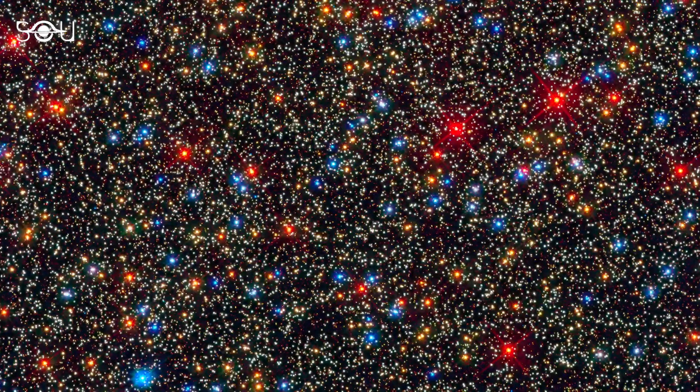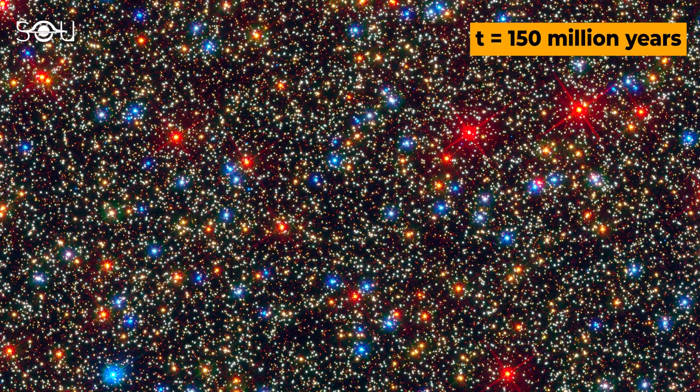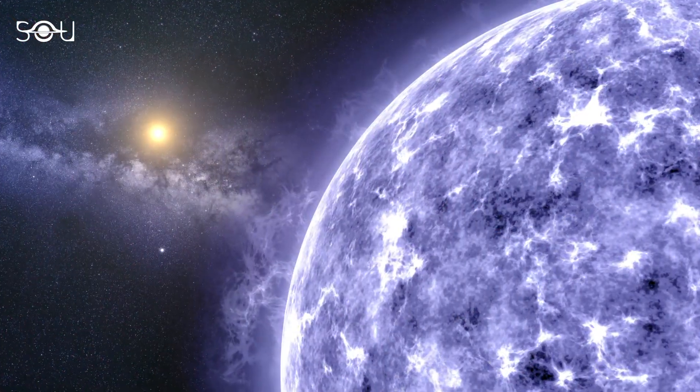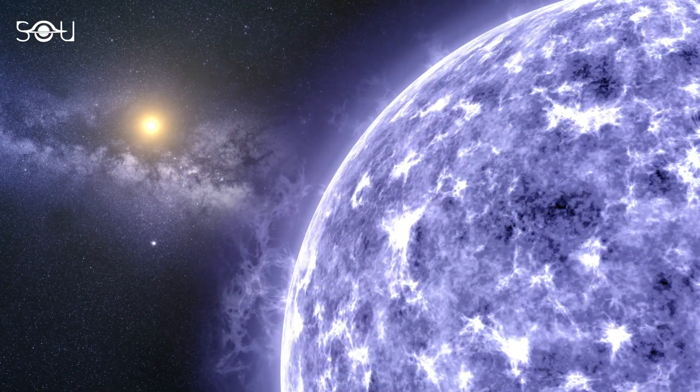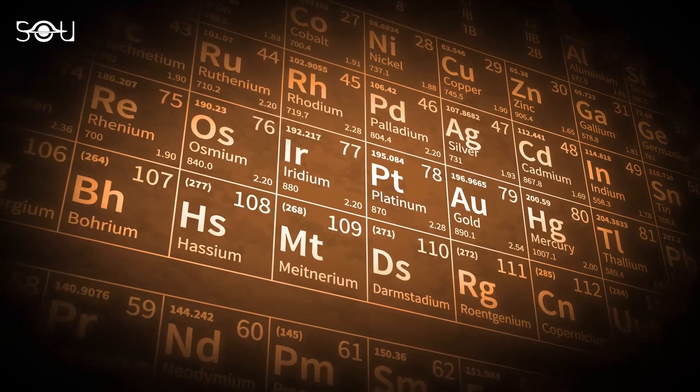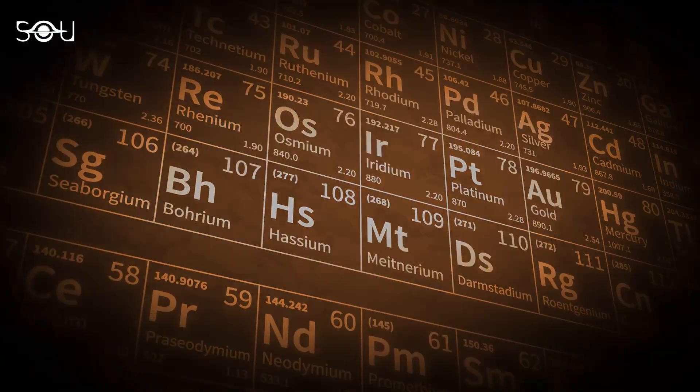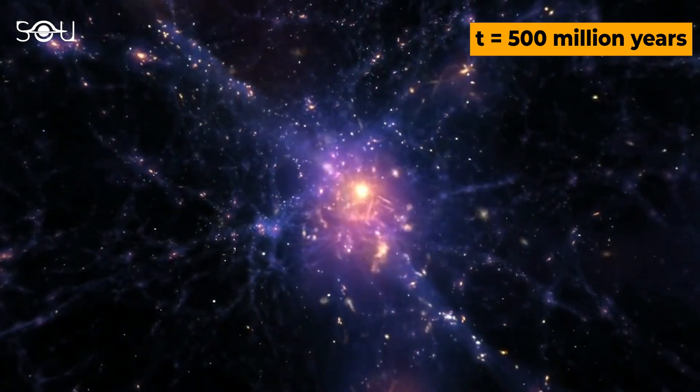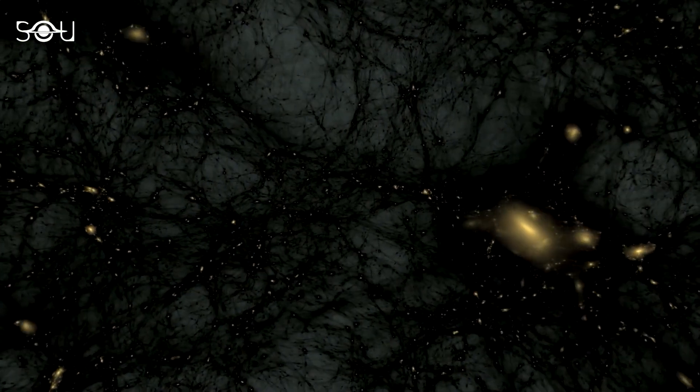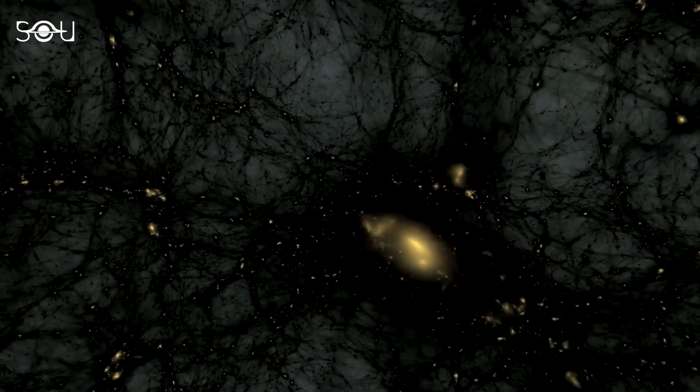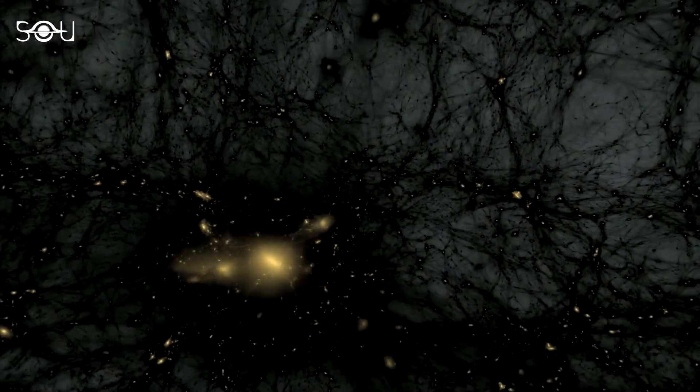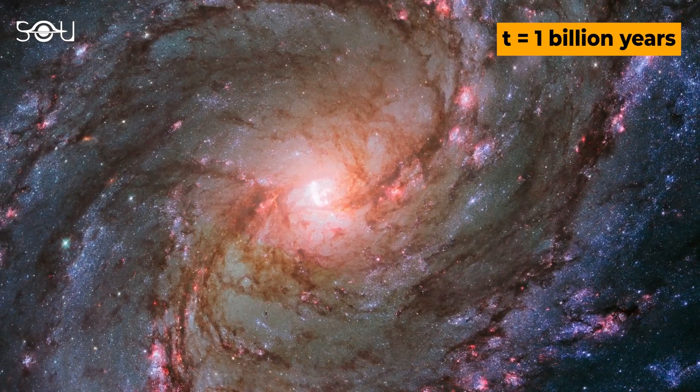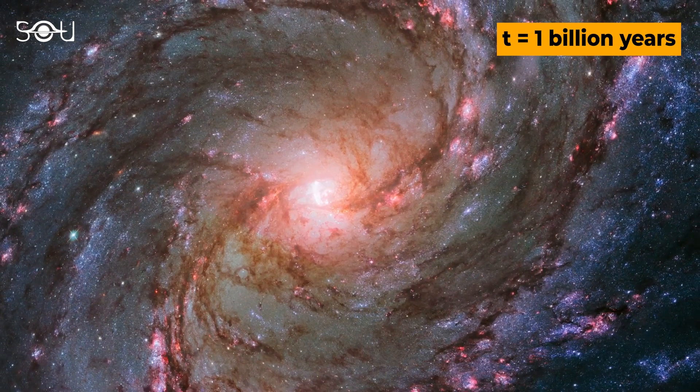The first stars formed about 150 million years later, ending the Dark Ages. This first generation of stars was primarily composed of hydrogen and helium and lacked heavy elements. They formed the first protogalaxies about 500 million years after the Big Bang. These were the clusters of gas that clung to vast, invisible dark matter structures. Finally, these protogalaxies merged to form the very first large galaxies of the universe.